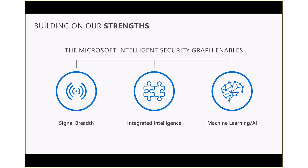For example, Windows Defender Advanced Threat Protection draws off the intelligence security graph, as does Office 365 Advanced Threat Protection and Azure Advanced Threat Protection and Advanced Threat Analytics. And finally, Microsoft is one of the global leaders in machine learning and artificial intelligence, and we bring all the research and investments we're making in ML and AI to our security story. When you put these three components together, we feel we're building on our strengths in delivering a very powerful threat protection and intelligence security management story, and that's why it's a very unique offering in the industry.